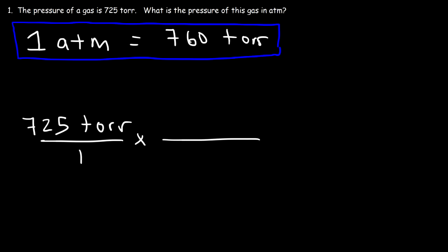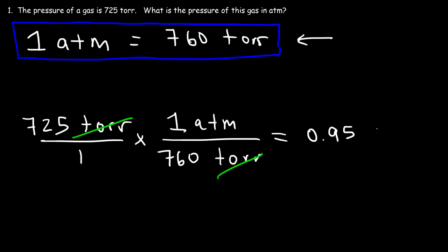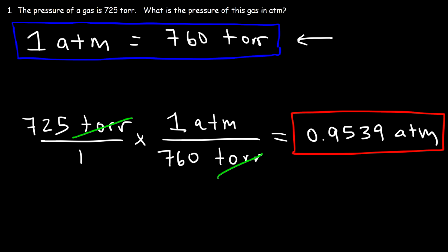In the next fraction, we're going to put the conversion factor. Because we have the unit torr on the top left, we want to put torr on the bottom right — the number that corresponds to torr is 760. On top, we put one ATM, so the unit torr cancels. It's 725 divided by 760, which gives approximately 0.9539 ATM. That's how you convert units of torr into units of ATM.